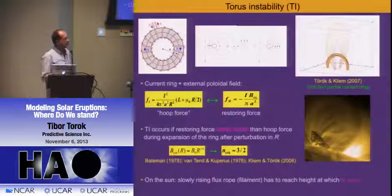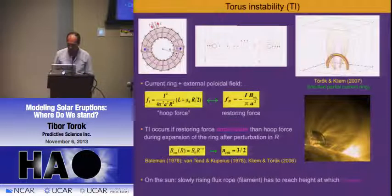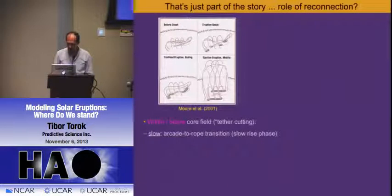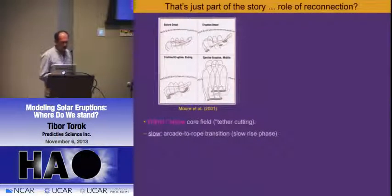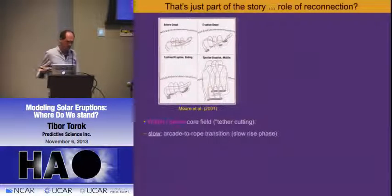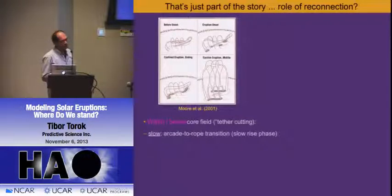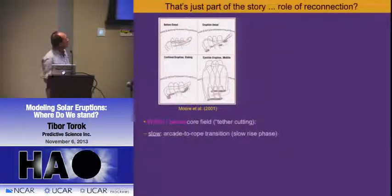That's not the whole story—reconnection is also important. These instabilities require a flux rope structure, and this is a debated topic: whether there is a flux rope prior to eruption, or whether it is formed during the eruption. One thing reconnection can do, as explained for example in the tether-cutting model, is slowly transform a sheared arcade—as these two elbows come together they reconnect, driven by slow flows, and you can form a flux rope structure.